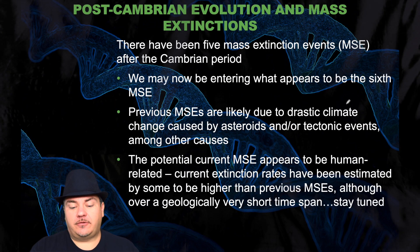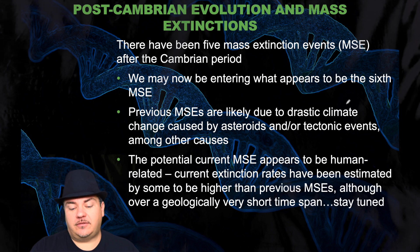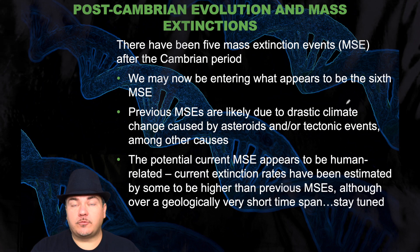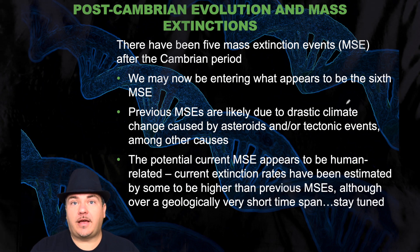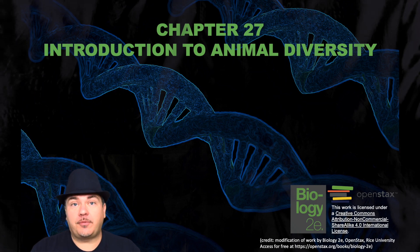There have been five mass extinction events after the Cambrian period. However, we may now be entering what appears to be the sixth mass extinction event. Previous mass extinctions were likely due to drastic climate change caused by asteroids and/or tectonic events. The potential current mass extinction appears to be human related. Current extinction rates have been estimated to be higher than previous mass extinction events, although over a geologically very short time span. On that very happy note, that's the end of your very brief introduction to animal diversity. We're going to learn a lot more about animals over the next couple of chapters. Until then, this has been Dr. Sage.